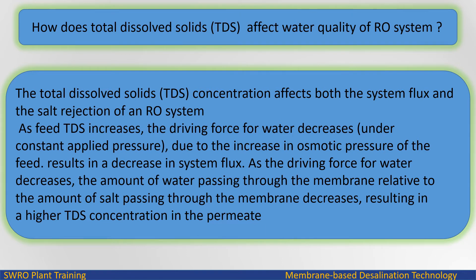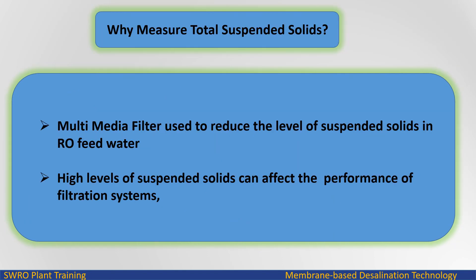The total dissolved solids (TDS) concentration affects both the system flux and the salt rejection of an RO system as feed TDS increases. The driving force for water decreases under constant applied pressure due to the increase in osmotic pressure of the feed, resulting in a decrease in system flux. As the driving force for water decreases, the amount of water passing through the membrane relative to the amount of salt passing through decreases, resulting in a higher TDS concentration in the permeate.